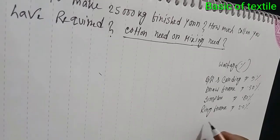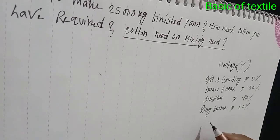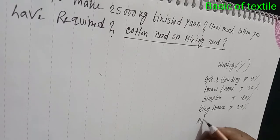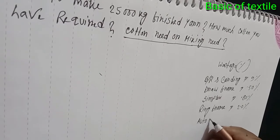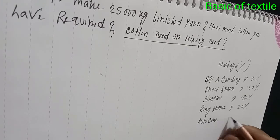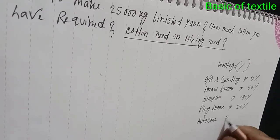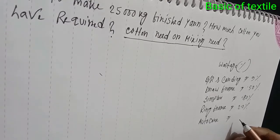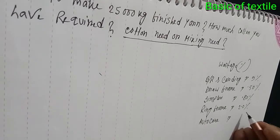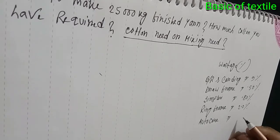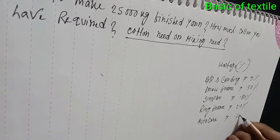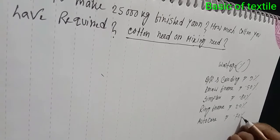Then Autocone — waste at Autocone is 0.70%.